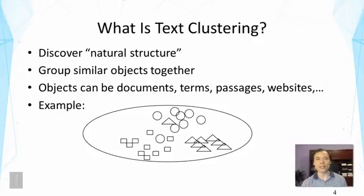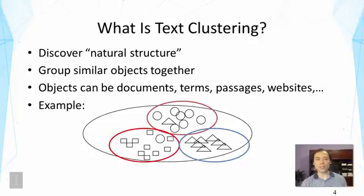Let's see an example. Here you don't really see text objects, but I just use some shapes to denote objects that can be grouped together. If I ask you what are some natural structures or natural groups, you might agree that we can group these objects based on their shapes or their locations on this two-dimensional space. So we get three clusters in this case, and there may not be so much disagreement about these three clusters.